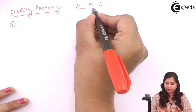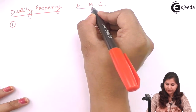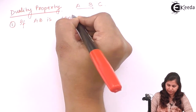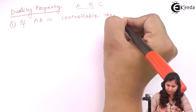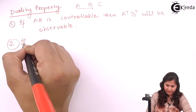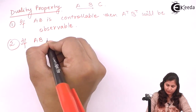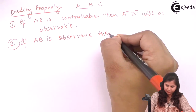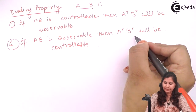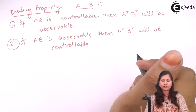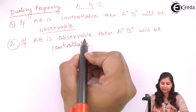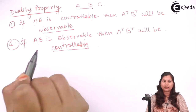The duality property states: if (A, B) is controllable, then (Aᵀ, Bᵀ) will be observable. Conversely, if (A, B) is observable, then (Aᵀ, Bᵀ) will be controllable. That is, if (A, B) is controllable then (Aᵀ, Bᵀ) is observable, and if (A, B) is observable then (Aᵀ, Bᵀ) is controllable.